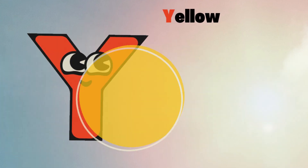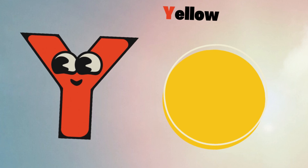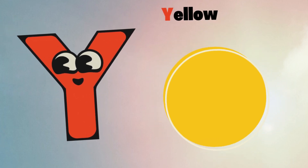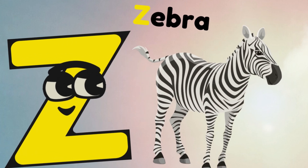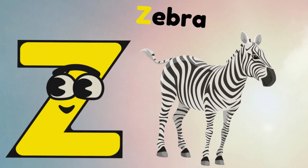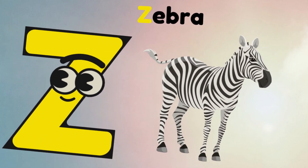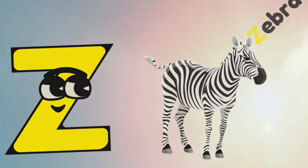Y is for yellow, y-y-yellow. Z is for zebra, z-z-zebra.